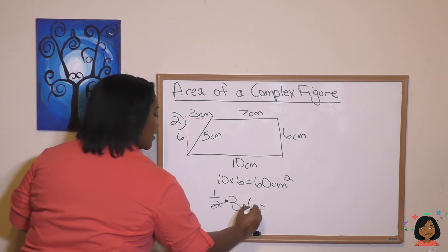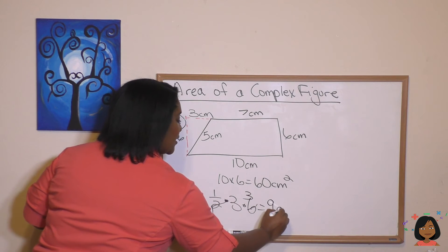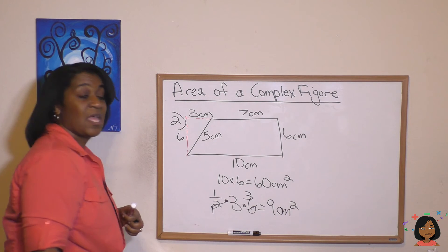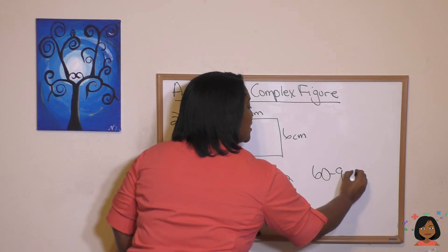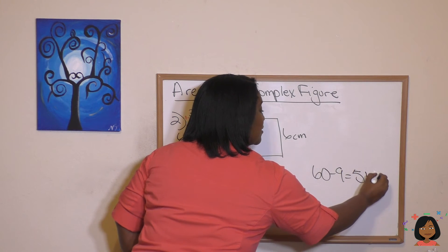One half times my base times my height. Do some canceling. Three times three is 9 centimeters squared. Let's go ahead and subtract that out. 60 minus 9 is 51 centimeters squared.